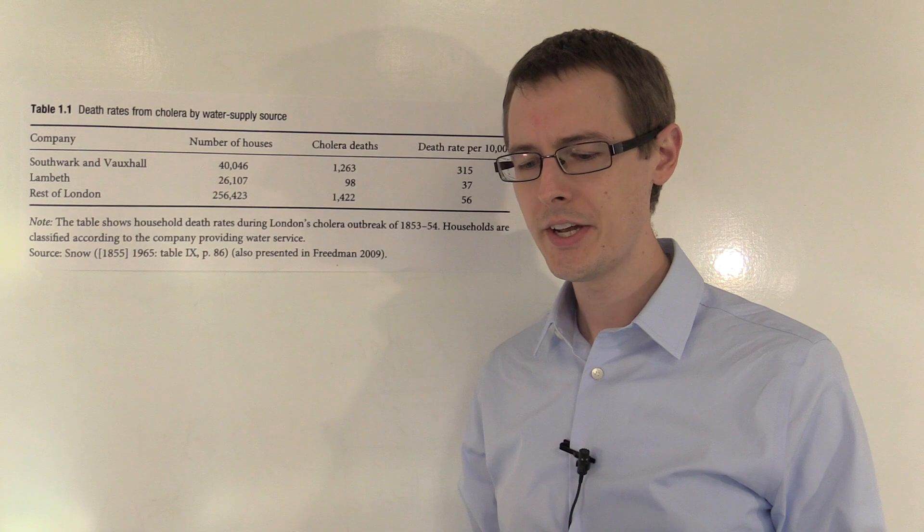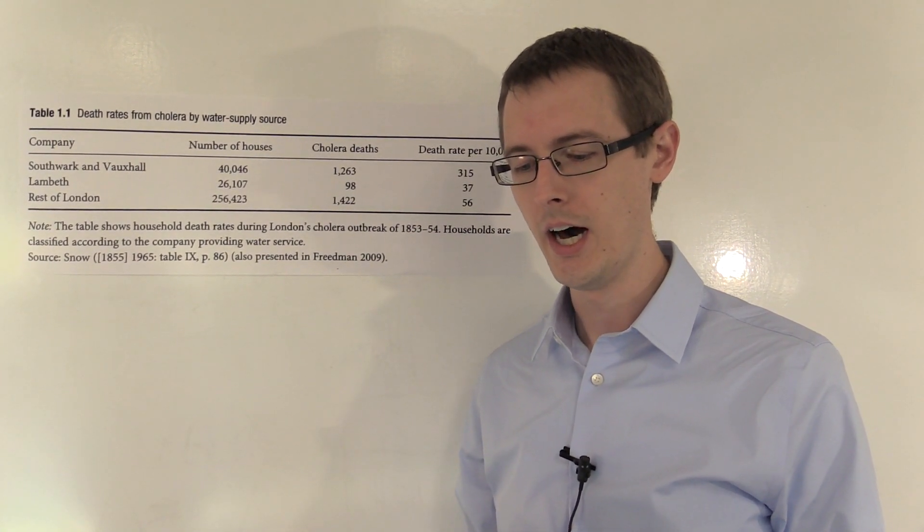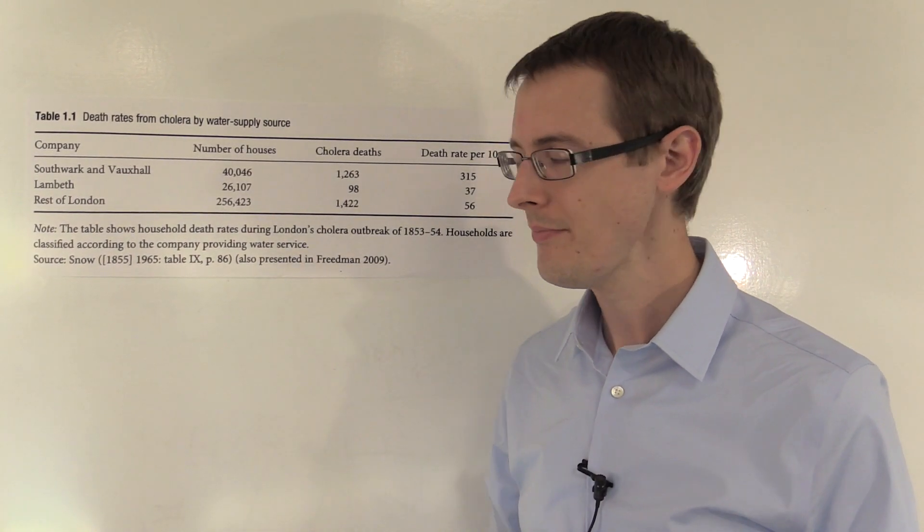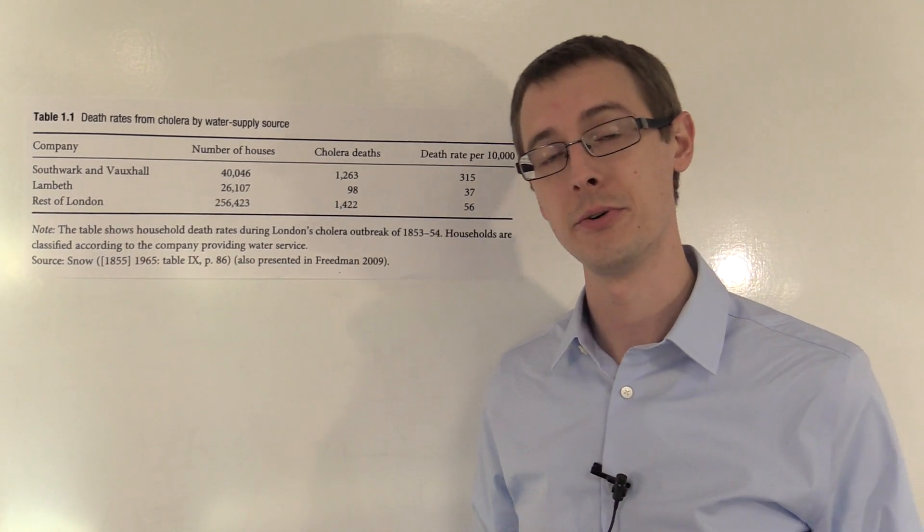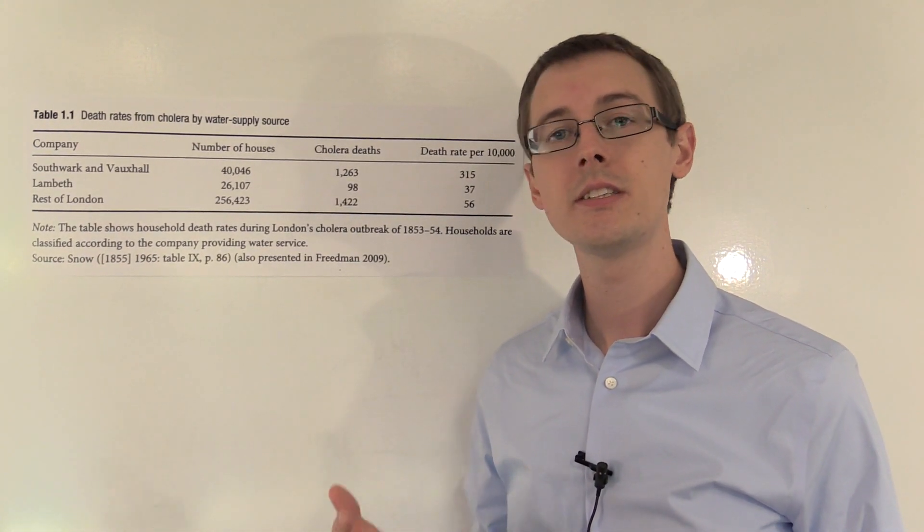It is obvious that no experiment could have been devised which would more thoroughly test the effect of water supply on the progress of cholera than this. That's John Snow speaking in 1855 after doing this analysis. What did he do? Well, he just did a balance check.